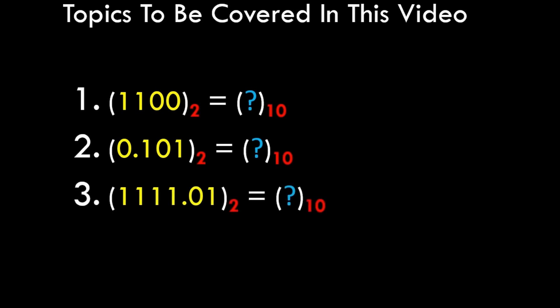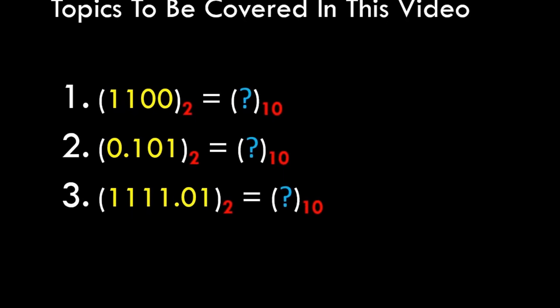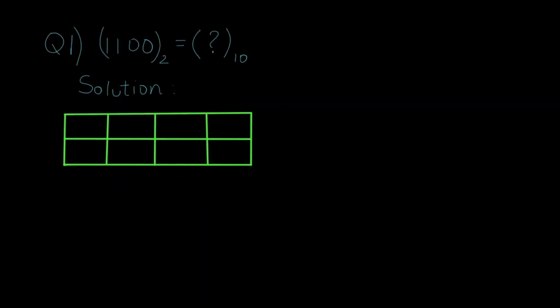If you have seen our previous video where we converted three decimal numbers to binary, the binary results were as shown on the screen. Here we are going to convert them back to decimal numbers so that it gets verified that we get our original answers. The answers we get will be the questions from the previous video, so if you haven't checked that video you can check it out to understand how to convert decimal to binary. Let's get started.